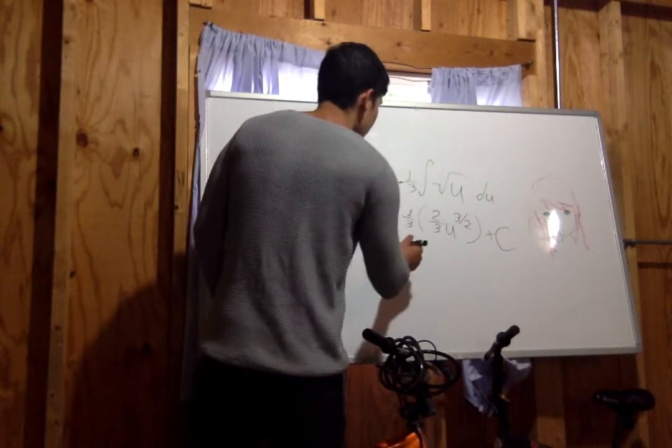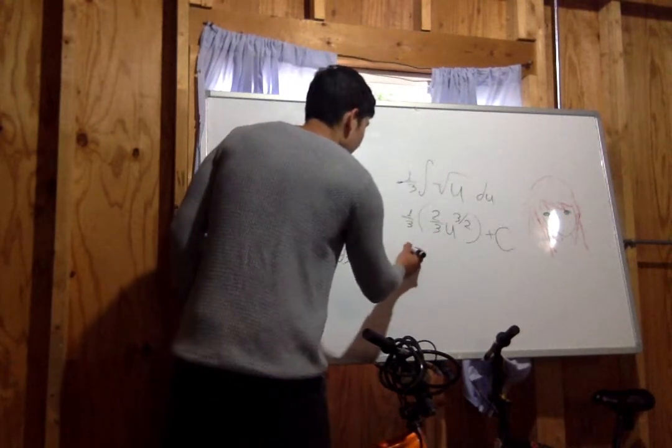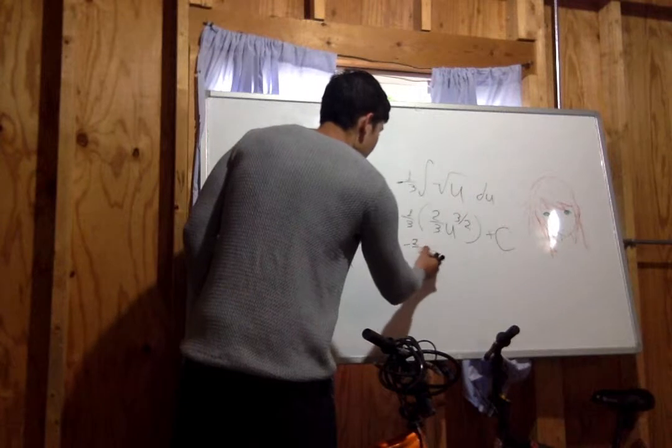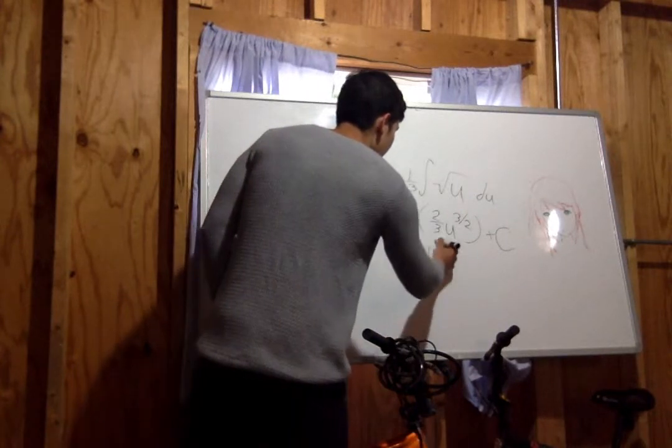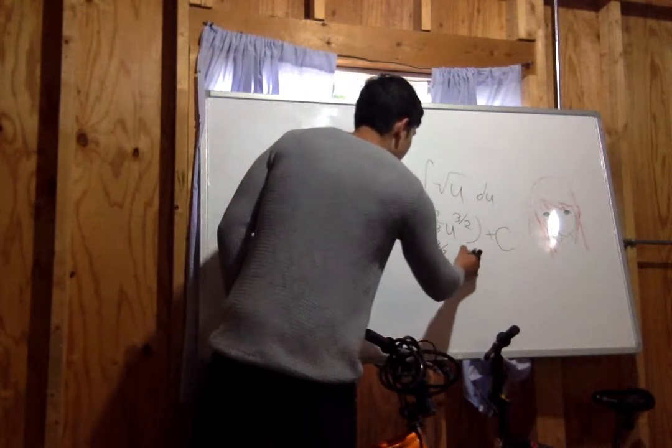Now multiply these together. You get negative 2 over 9, u to the 3 halves, plus c.